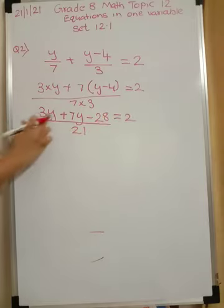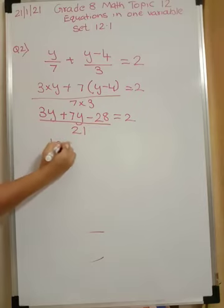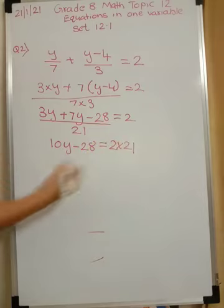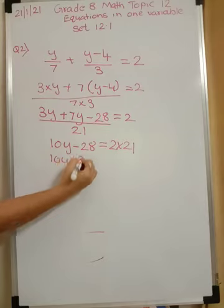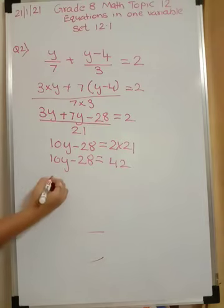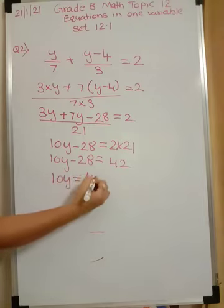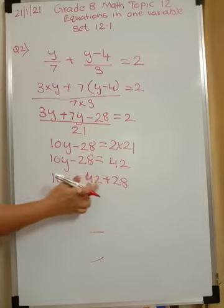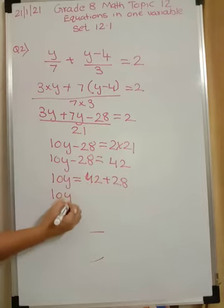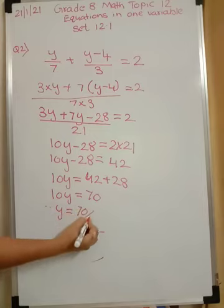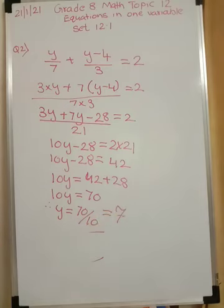Now let me shift 21 to that side and 3y plus 7y like terms can be added. So you have 10y minus 28 is equal to 2 into 21. So you have 10y minus 28 is equal to 42. So you have 10y is equal to 42 plus 28. Now 40 plus 20 is 60 and 8 plus 2 is 10. So this becomes 70. 10y is equal to 70 and therefore y will be equal to 70 upon 10 which is equal to 7. I hope this is clear. Very easy to understand. You just have to work with numbers and signs.